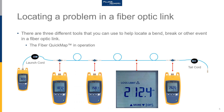Moving along the fiber, at 212 meters we have an event — the third event of five. The instrument is indicating we've exceeded a loss limit. I set a loss limit of 0.5 dB for all events down the fiber. In this particular case, there is no R value below the length, so this is a non-reflective event — tending to indicate that I have a bad splice at 212 meters.